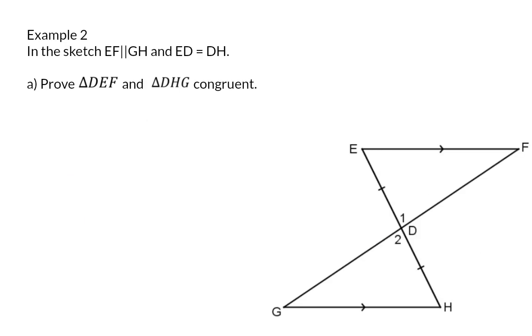Example 2. In this sketch, EF is parallel to GH, so now you need to immediately remember that you might be able to use alternate, corresponding, or co-interior angles. Then, we are also given that ED is the same length as DH.